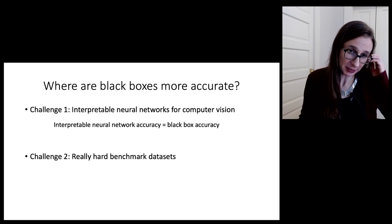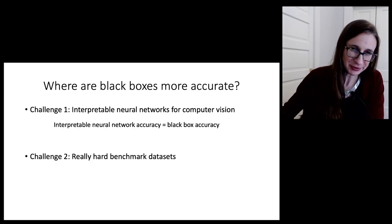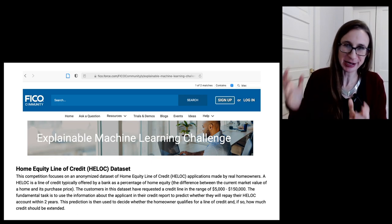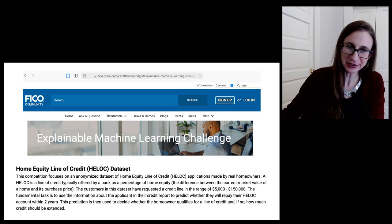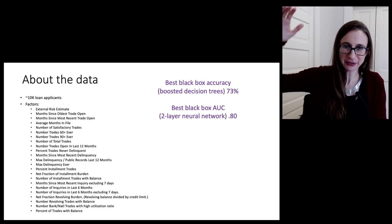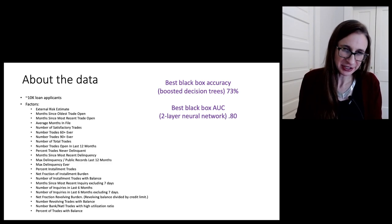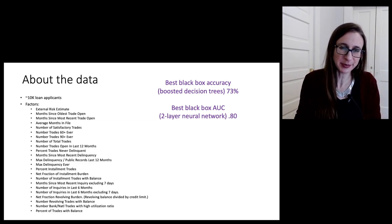Let's pose a second challenge and work on some really hard benchmark datasets. I want to switch to the dataset from the FICO explainable machine learning challenge, where the goal was to create a black box and explain it. I want to tell you a little about this dataset. It's a home equity line of credit dataset that gives you a whole bunch of different factors about each person's credit history — about 10,000 loan applicants — and your job is to predict whether or not they're going to default on their loan. If you run a bunch of black box machine learning algorithms, you'll get that the best accuracy is around 73% and the best black box AUC is about 0.8, which are the two most common performance metrics.